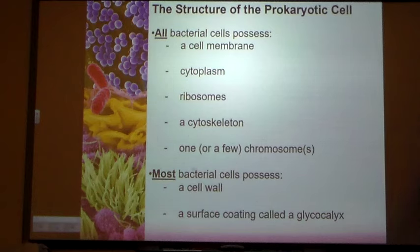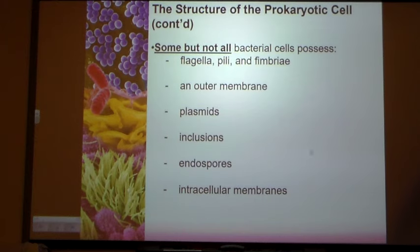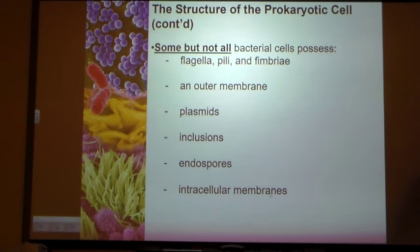In addition, there's the cell wall, the glycocalyx — we'll talk about that. Some but not all bacteria may possess flagella, an outer membrane, plasmids, and inclusions. We'll talk about all of these structures.